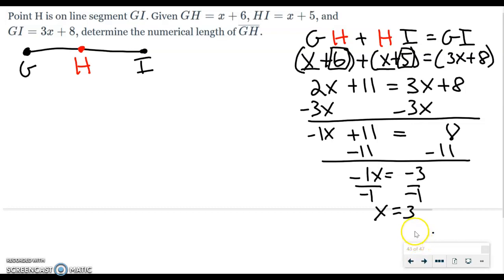So X is equal to 3. But keep in mind, the total objective is not to find out what X is. The total objective is to find out what GH is. So what we're going to do is take GH. And GH is X plus 6. So now that I know what X is, I'm going to plug in 3 for X. And now I know that GH is equal to 3 plus 6, which is 9.